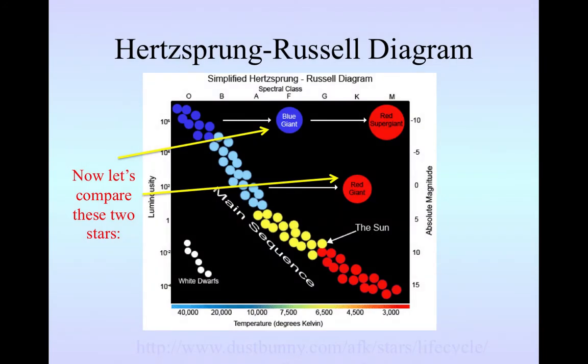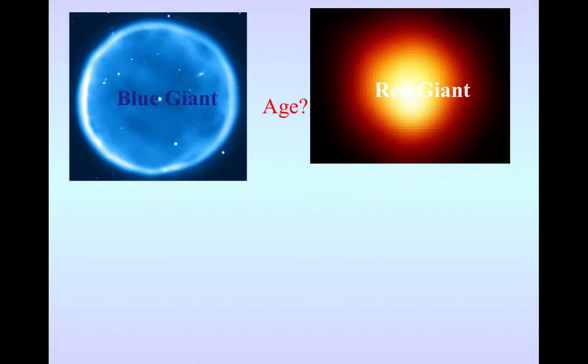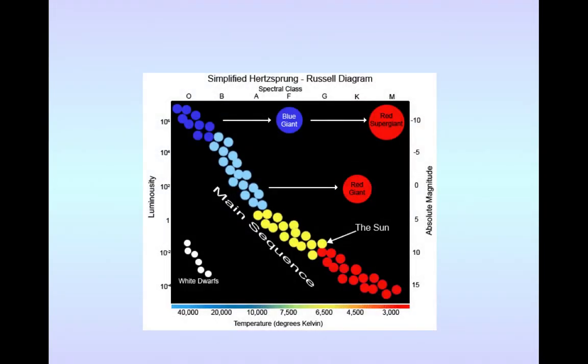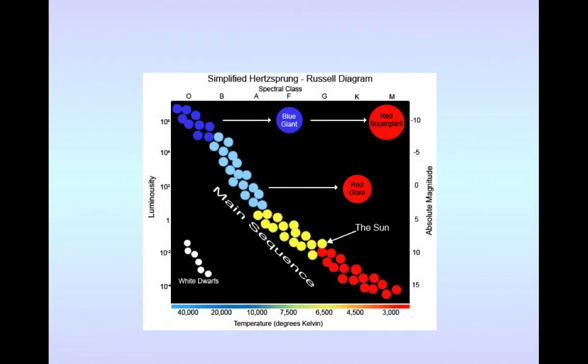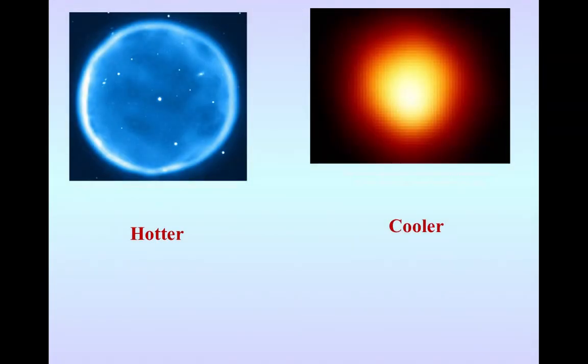Again, here's our Hertzsprung-Russell diagram. So let's finish by comparing my blue and my red giant. So which one is younger, my blue giant or my red giant? So we'll look at our Hertzsprung-Russell diagram. Our blue one, because it's blue, so it's hotter. It hasn't cooled down yet. How about temperature? I think I just gave that one away. Here's my Hertzsprung-Russell diagram. You got it. The blue one is hotter.